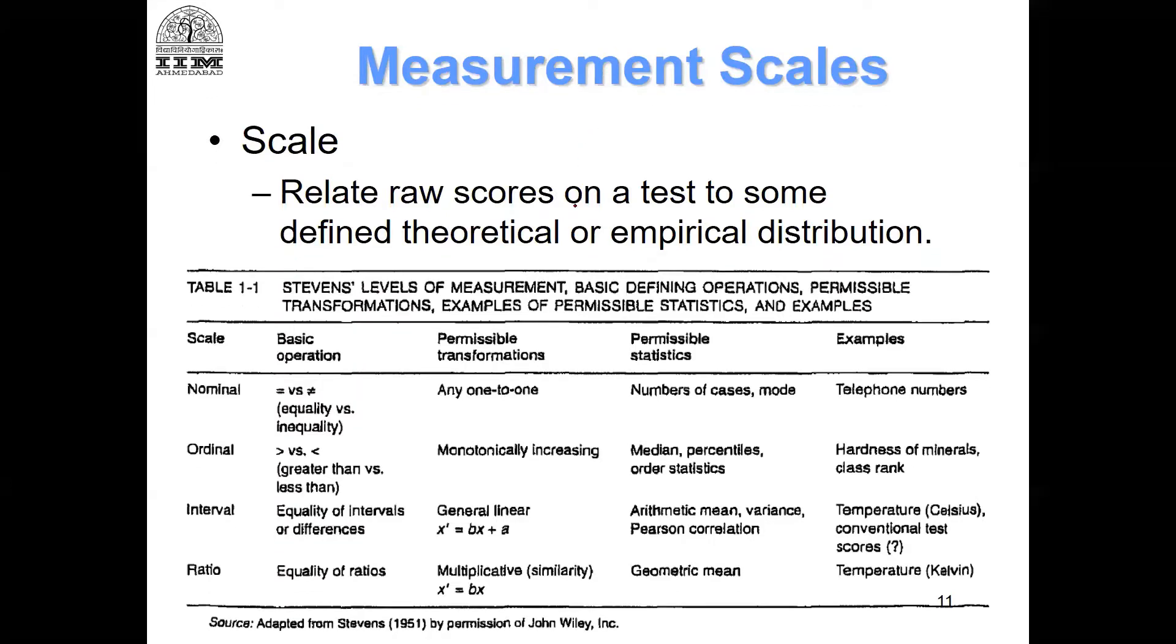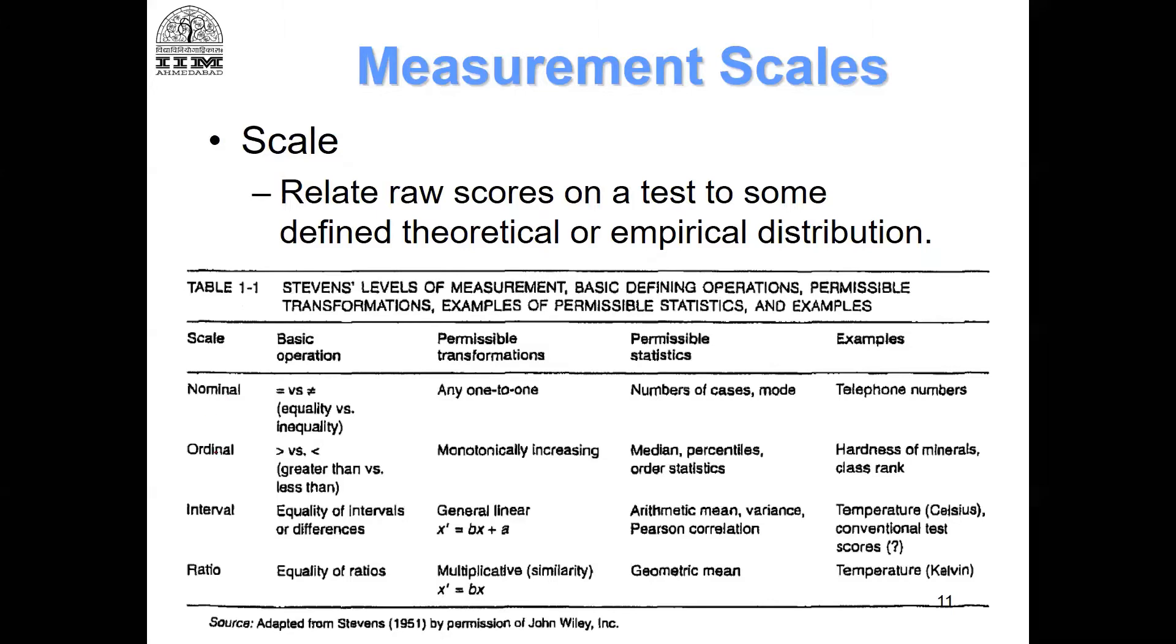There are different ways of assigning numbers. One is called a nominal scale, another is ordinal, the third is interval, and the fourth is ratio. These terminologies are important for us to look at.